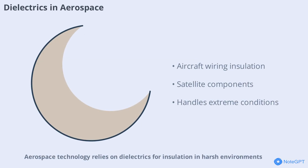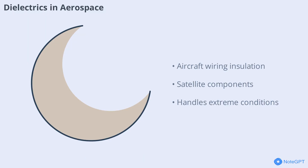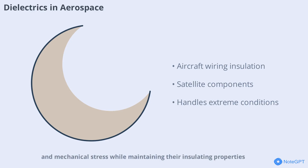Aerospace technology relies on dielectrics for insulation in harsh environments. Lightweight, high-strength dielectrics are used in aircraft wiring, satellite components, and space probes. These materials must withstand extreme temperatures, radiation, and mechanical stress while maintaining their insulating properties.